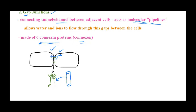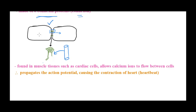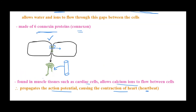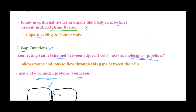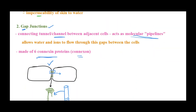One connexon from one cell and one connexon from the neighboring cell come together against each other, forming a continuous pipeline between the two cells. Through this channel, flow of water and ions takes place from one cell to another. Since gap junctions allow passage of molecules from one cell to another, they are found in muscle tissues like cardiac cells, where they allow the flow of calcium ions from one cell to another.